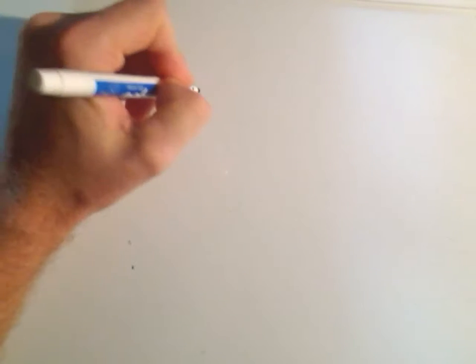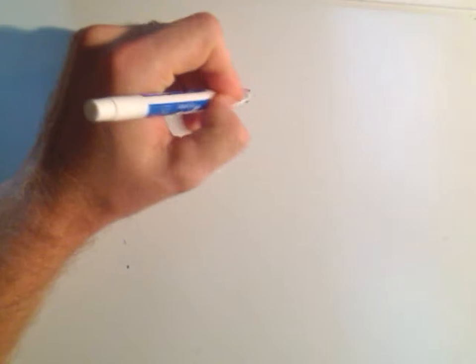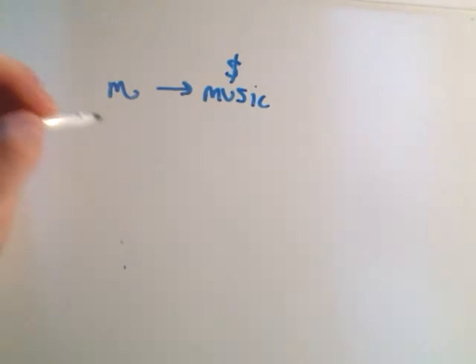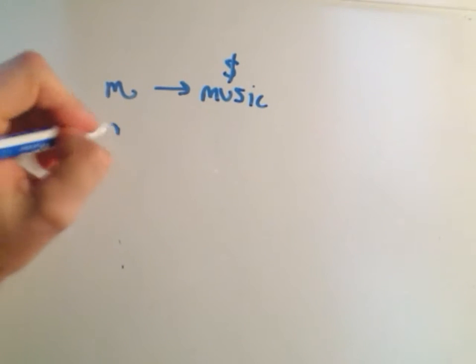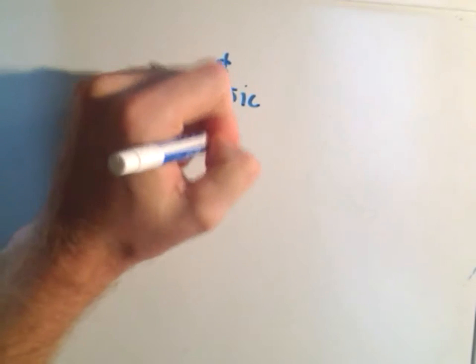I didn't write this one all the way down, but M is the amount of money he spends on music, and C is the amount of money he spends on clothes.